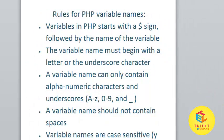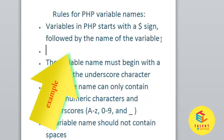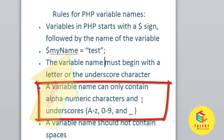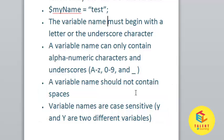These are the rules for PHP variable names. Variables in PHP start with $ followed by the name of the variable, like $myname. The variable name must begin with a letter or the underscore character. A variable name can only contain alphanumeric characters and underscores. A variable name should not contain any spaces. Variable names are case sensitive.